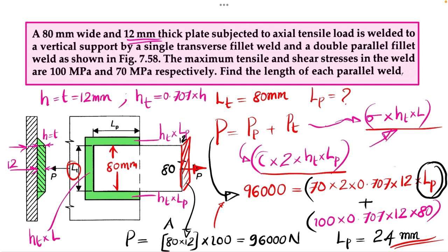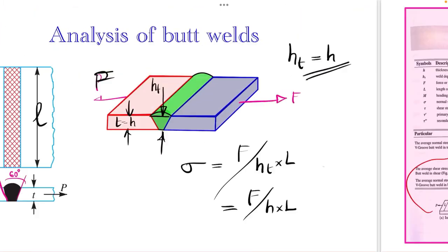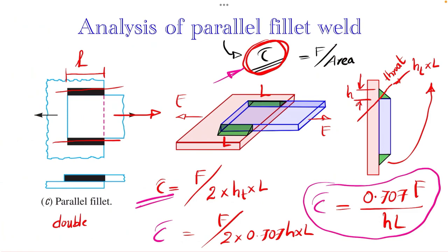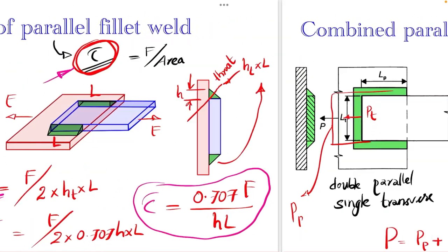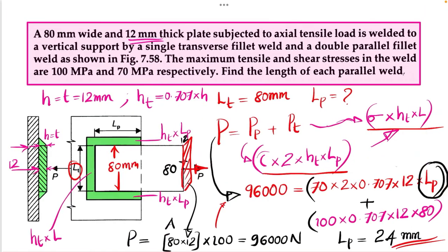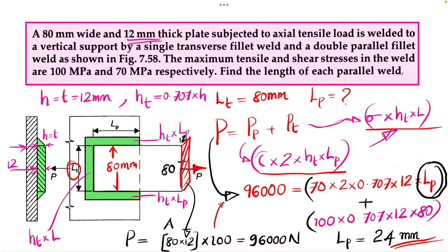Usually an extra 10 mm is added to this length of the parallel fillet weld for starting and stopping of the weld bead. So the final length of parallel fillet weld is approximately 24 + 10 = 34 mm. This is the complete procedure for analyzing combined parallel and transverse fillet weld. In this video, we discussed the analysis of transverse and parallel fillet welds, the importance of the throat section as the weakest area, and the relevant equations also found in design data books. Thanks for watching.